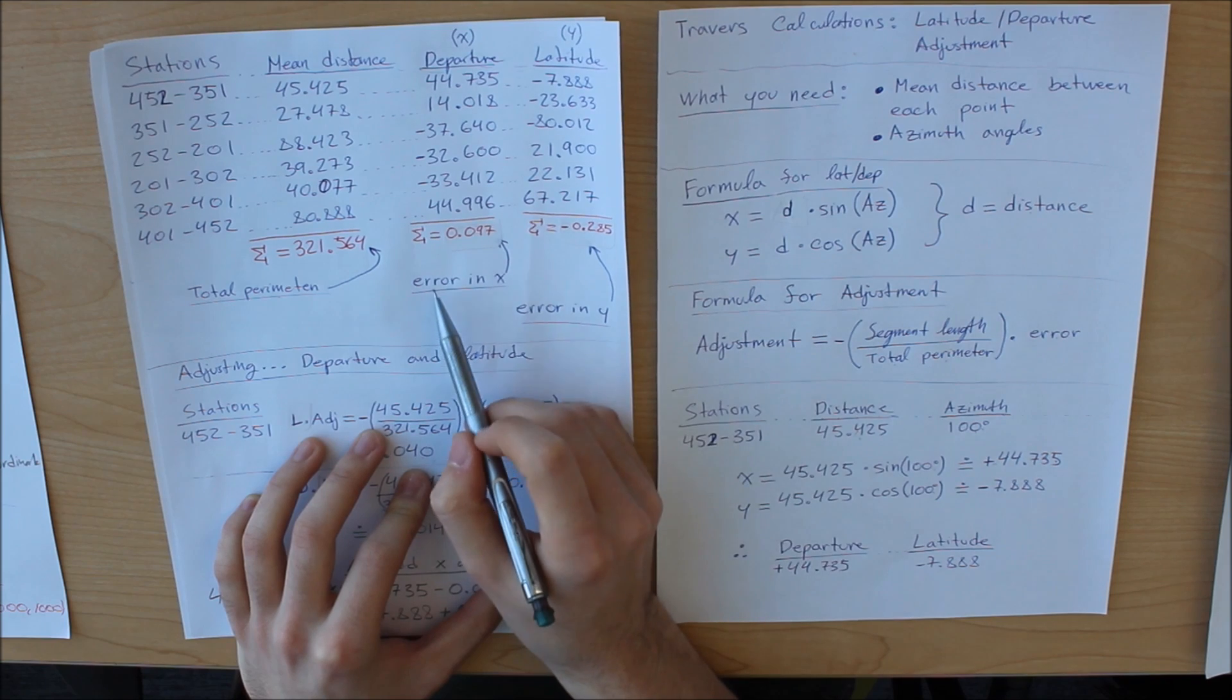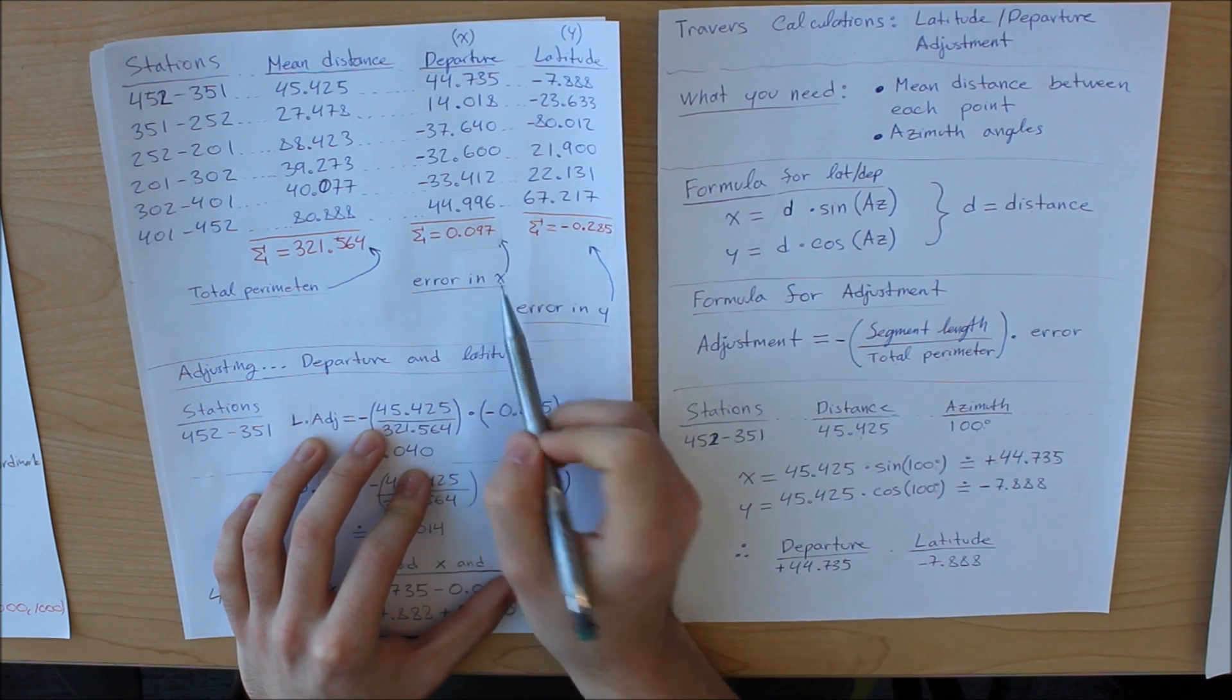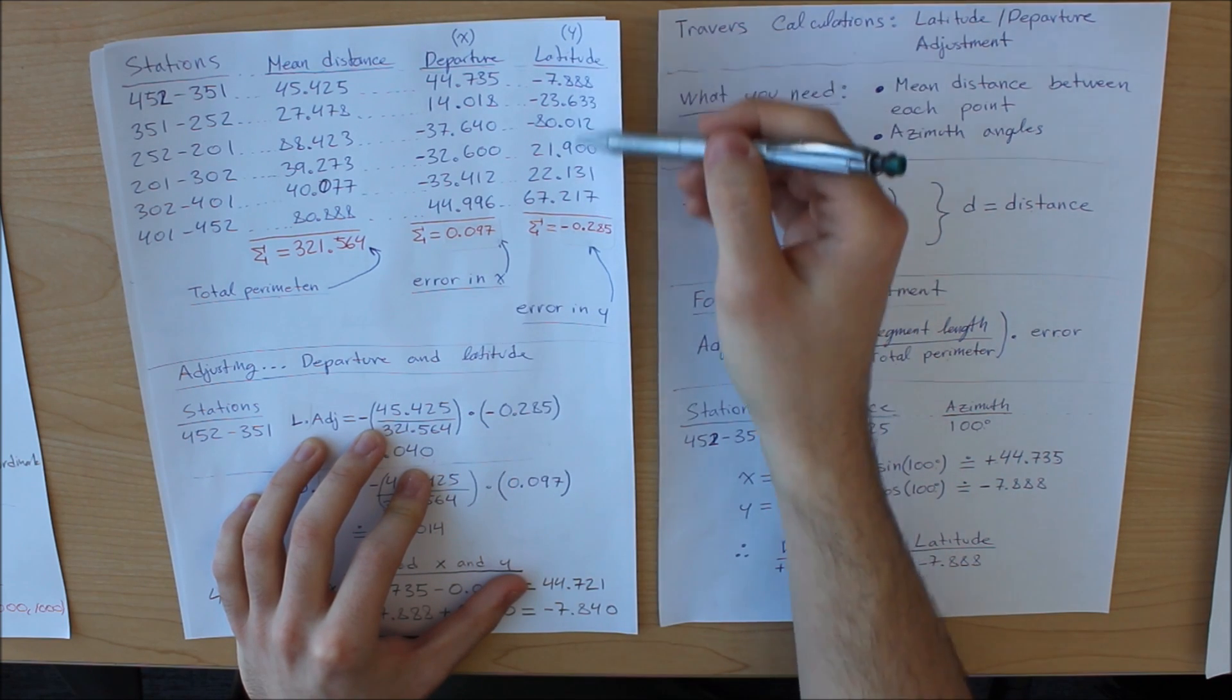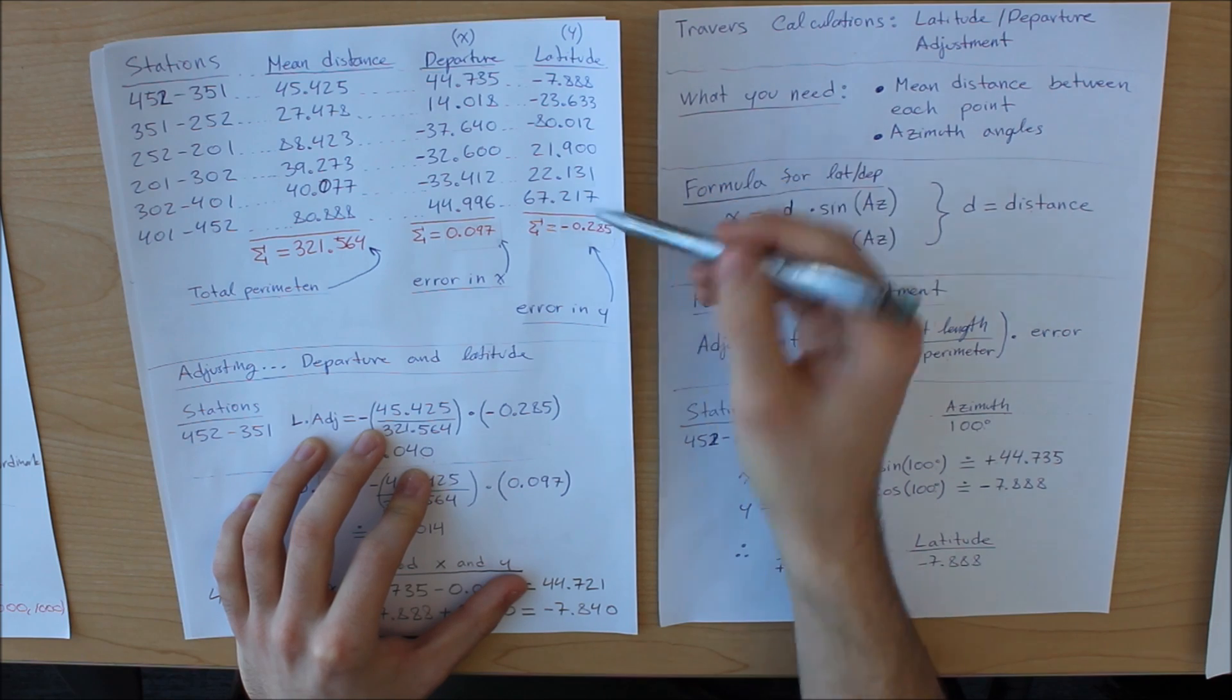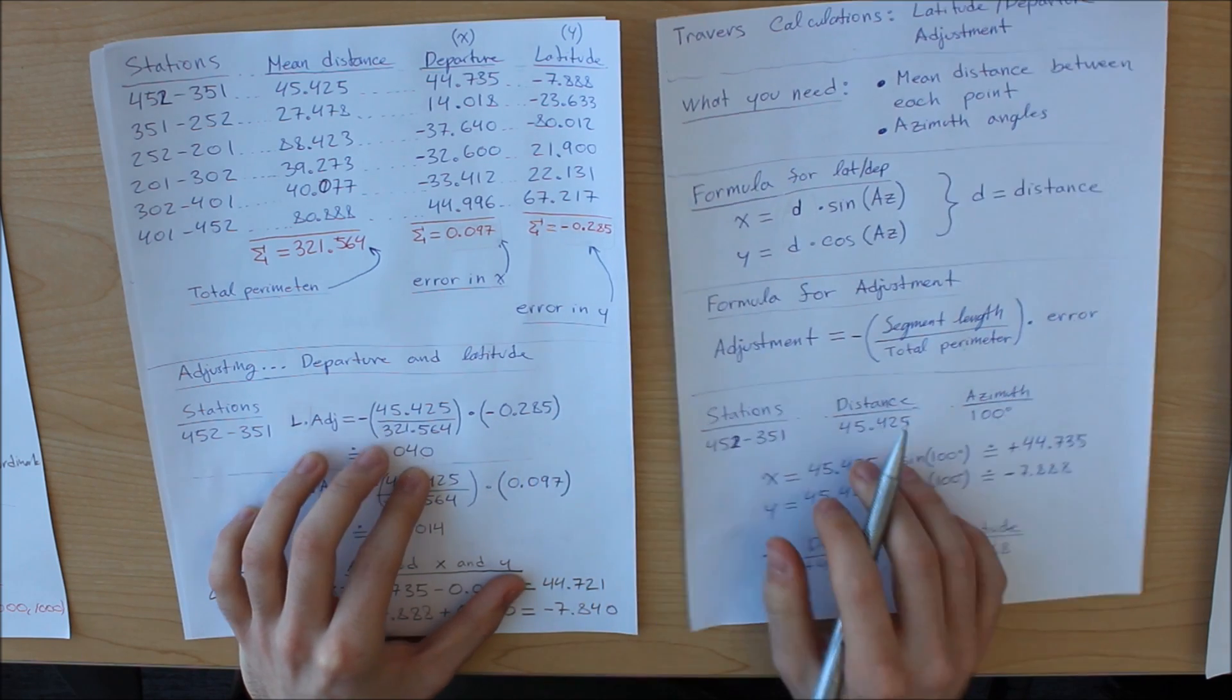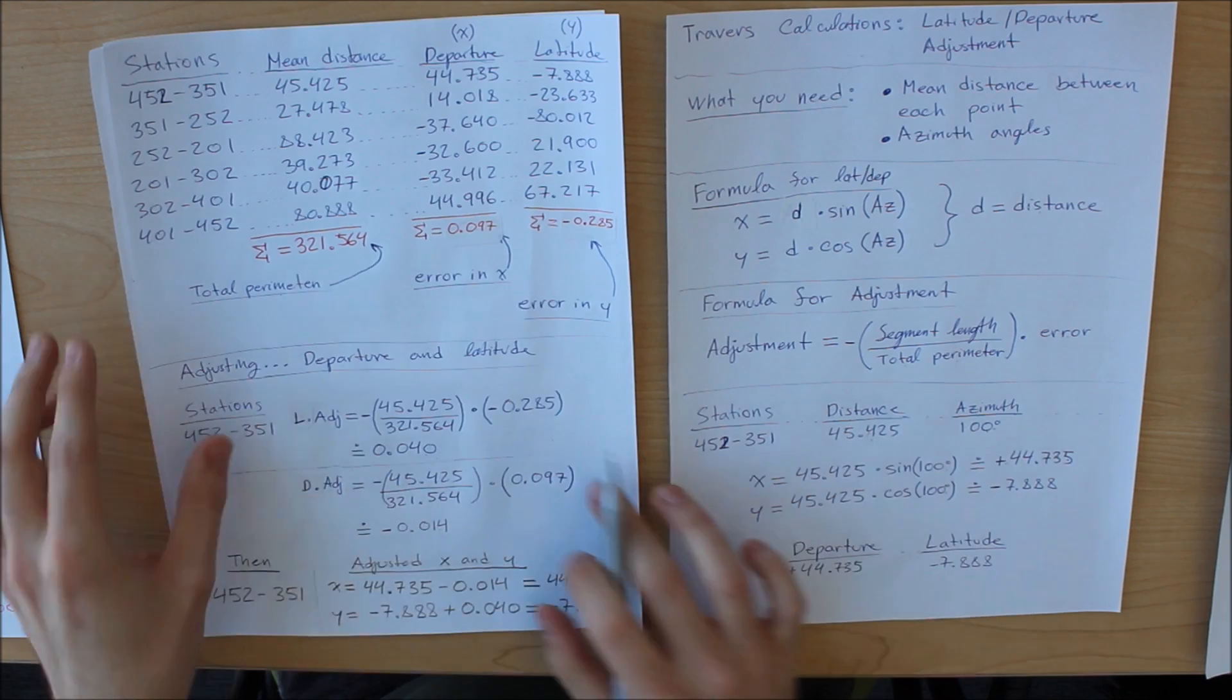If you add your departure, that is your error in the x component. Your latitude, once you add it up, this number right here is the error in your y. Now I will show you what to do next.